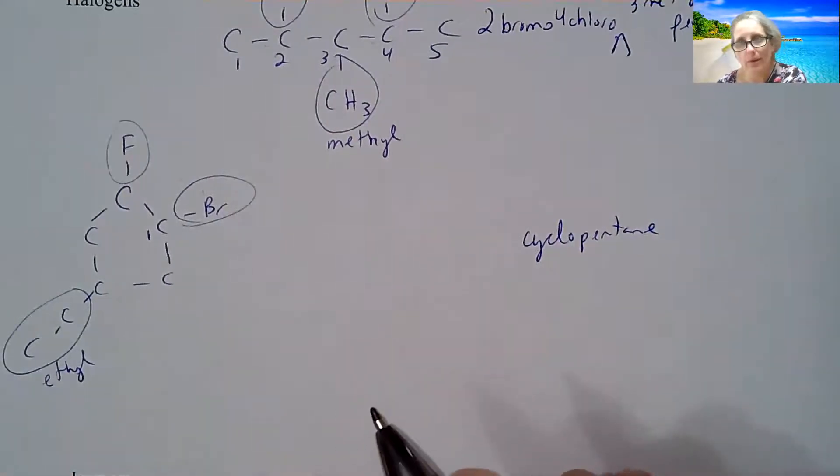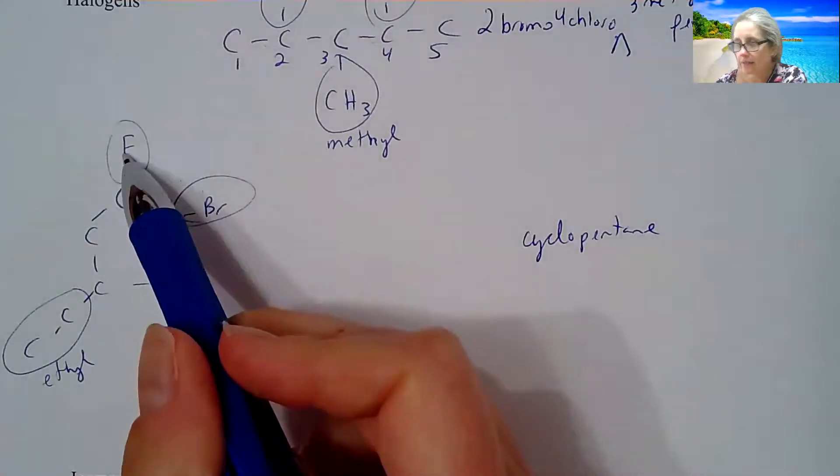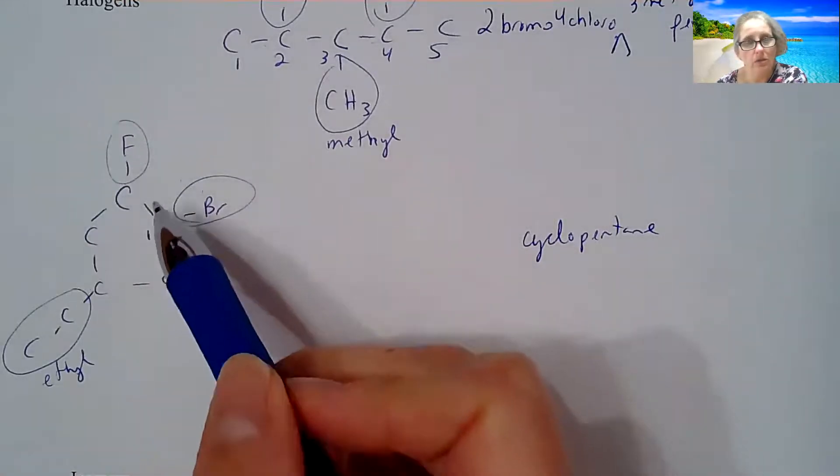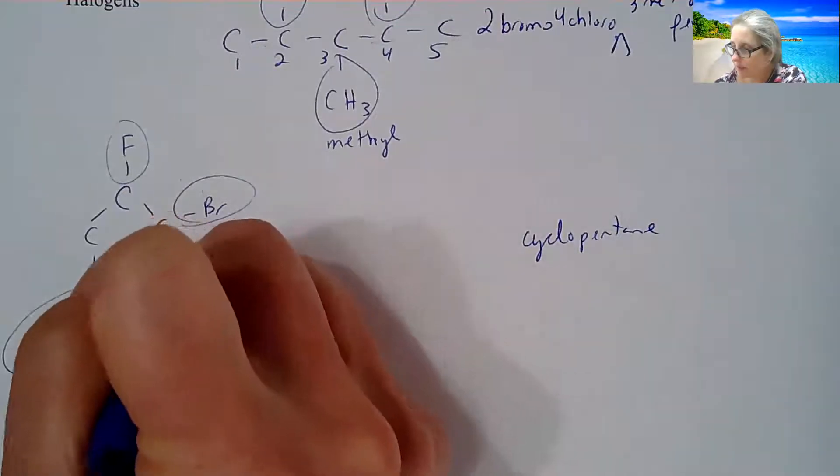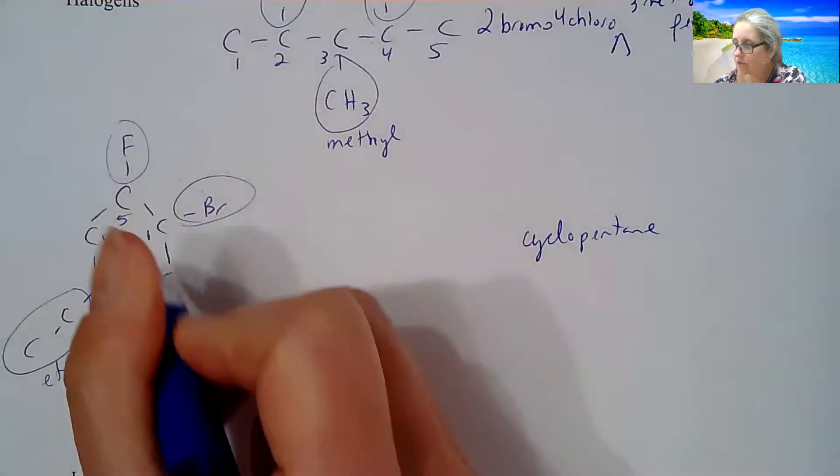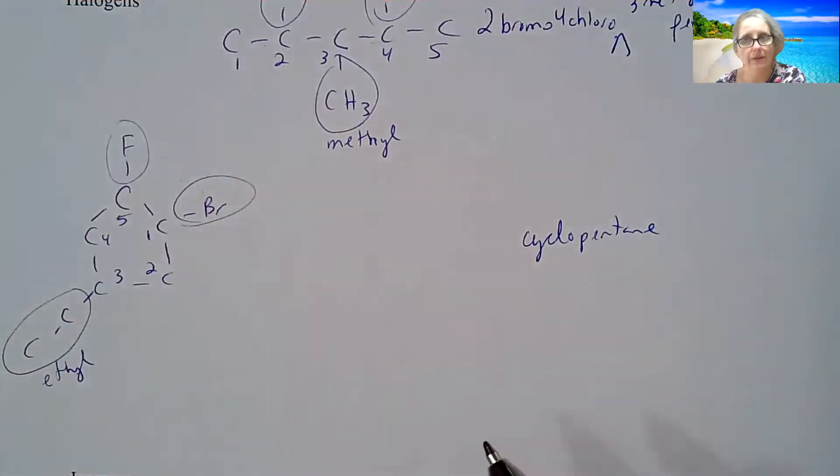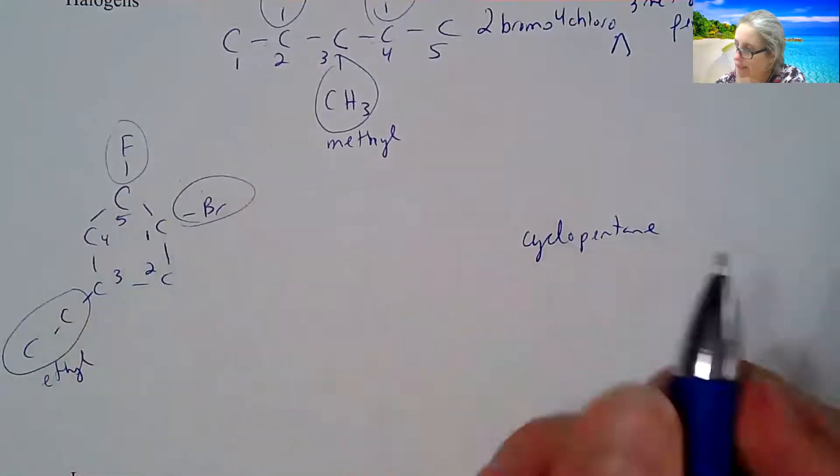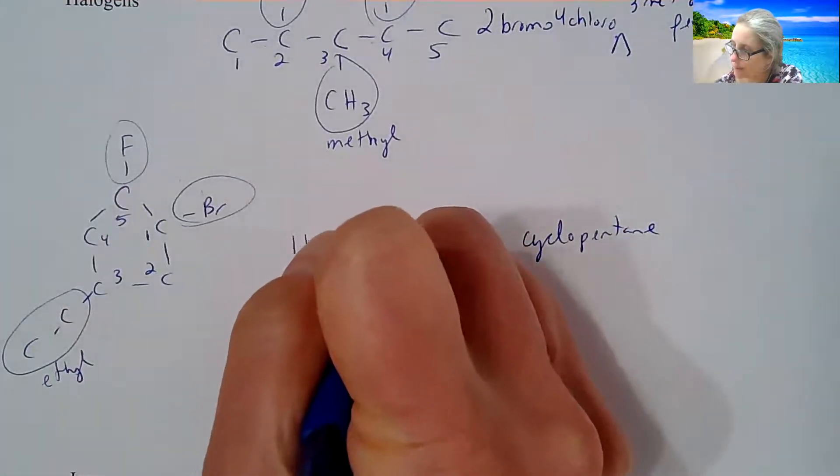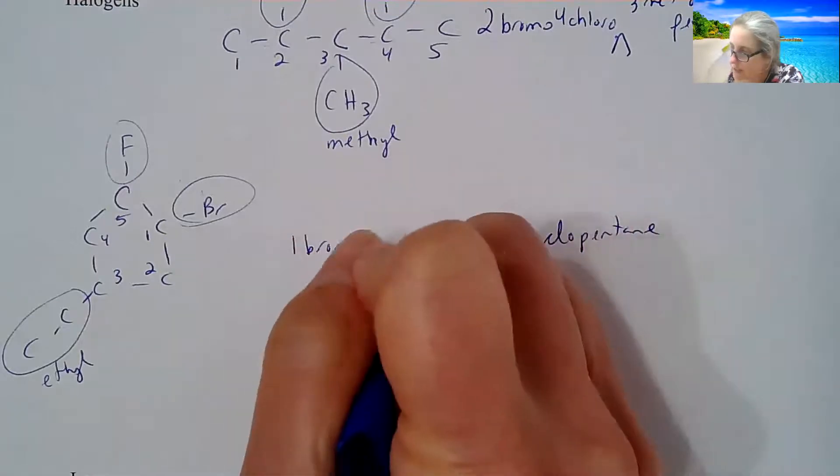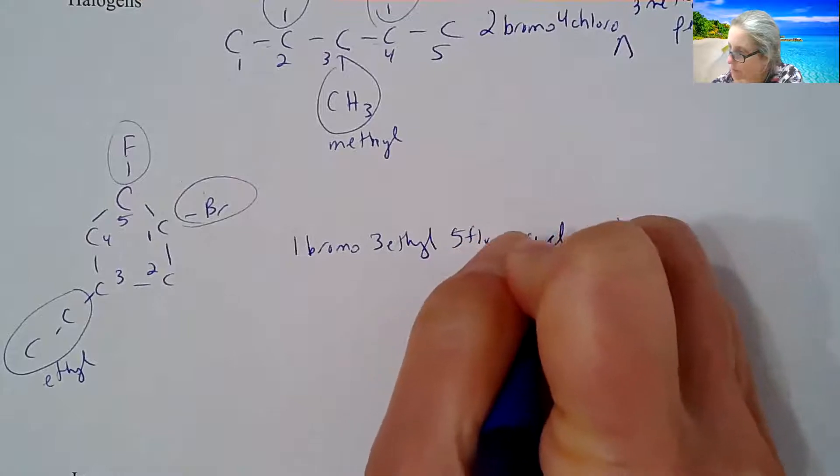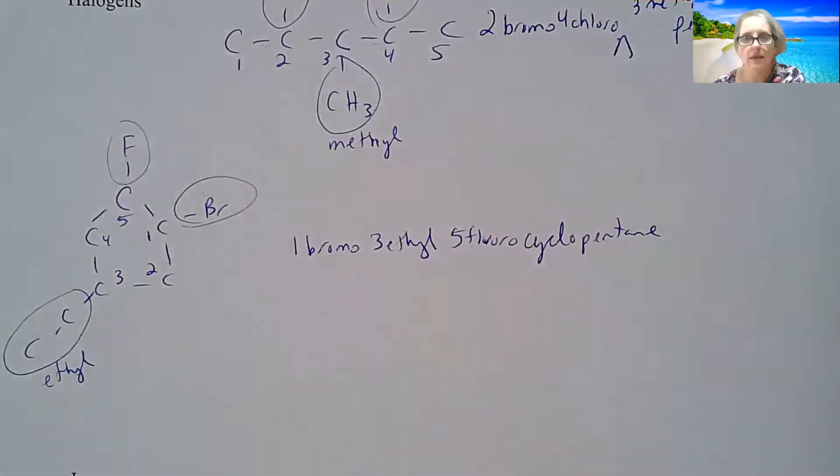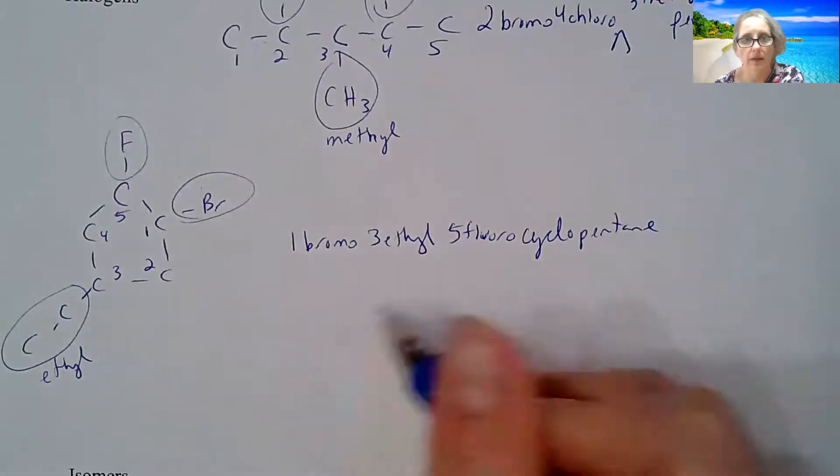But here's the tricky part. Do I go and get the fluoro? Do I go counterclockwise, or do I do clockwise? Well, you might think that I'm going to go clockwise, because the alpha group should be the next thing I go in the alphabet, which is not a bad way to approach it. So let's see if I write that name according to that naming system. So 1-bromo, then it goes 3-ethyl, then it goes 5-fluoro, and then it goes cyclopentane. And you think you're done.